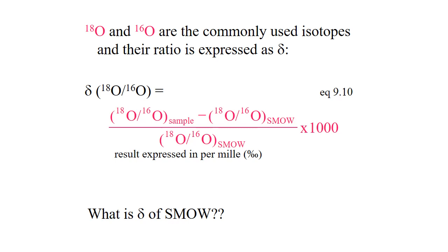So we have to ask: if we're normalizing to SMOW, what is the delta value of SMOW? Well, if we put the value of SMOW into our equation — the SMOW ratio in the sample location, minus the same number, divided by that number — we're going to end up with zero. So the delta-18-O value of SMOW is always going to be zero.